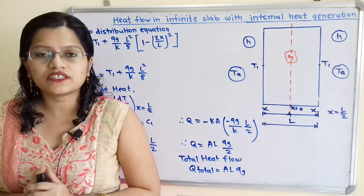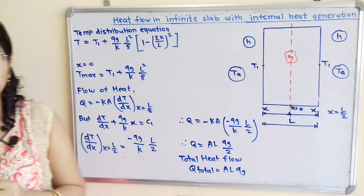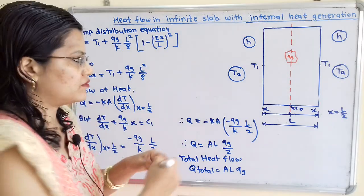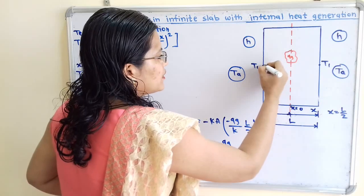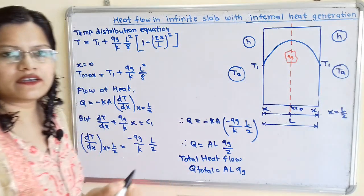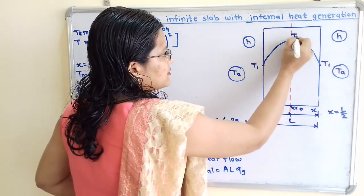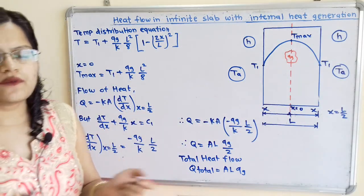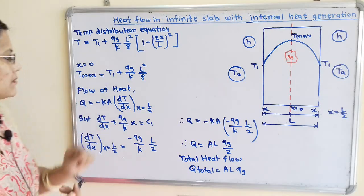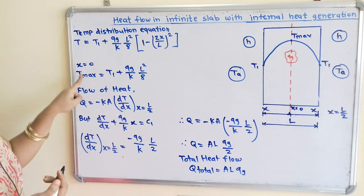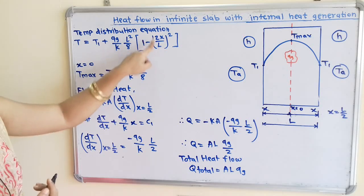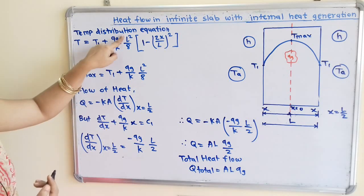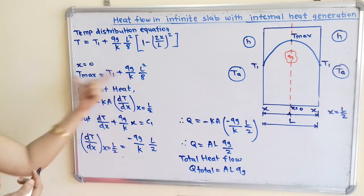Observing the temperature distribution equation, T is directly proportional to x², so the temperature distribution curve is a parabolic curve. From the parabolic curve, the maximum temperature T_max occurs at the center where x = 0. Substituting x = 0, the bracketed term becomes 1, so T_max = T1 + (QG/K)·(L²/8). This is the equation for the maximum temperature.